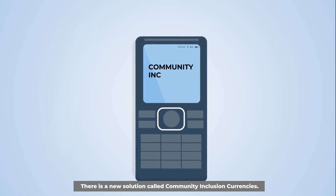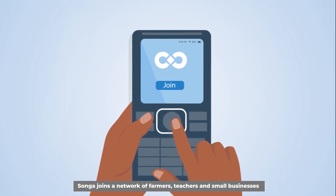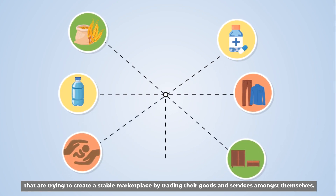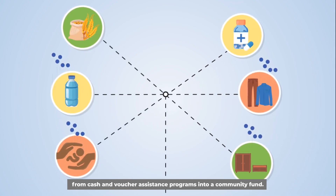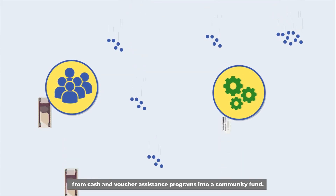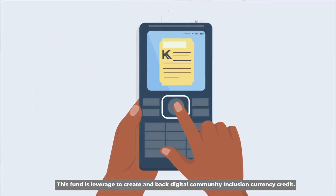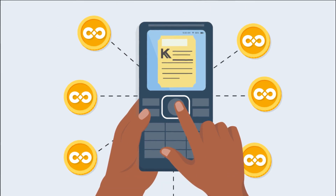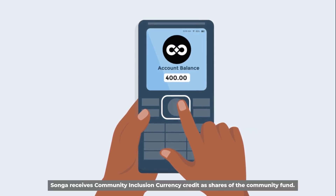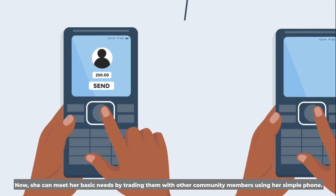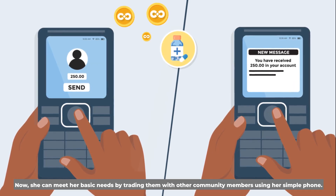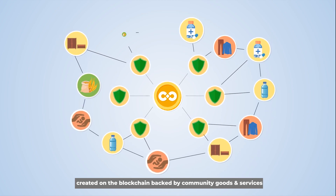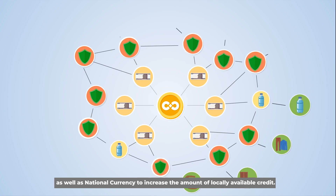There is a new solution called Community Inclusion Currencies. Songa joins a network of farmers, teachers and small businesses that are trying to create a stable marketplace by trading their goods and services amongst themselves. The network pools their resources as well as donor assistance from cash and voucher assistance programs into a community fund. This fund is leveraged to create and back digital Community Inclusion Currency Credit, securely and transparently created on the blockchain, backed by community goods and services as well as national currency to increase the amount of locally available credit.